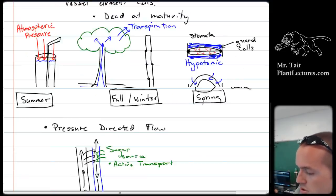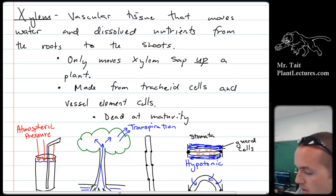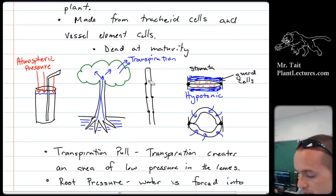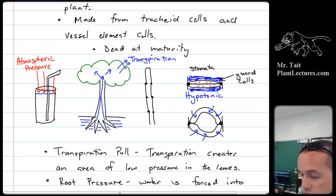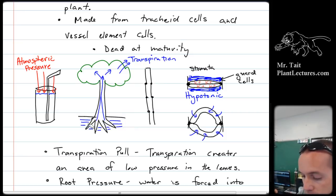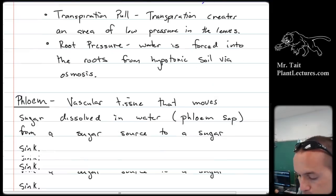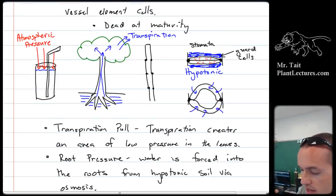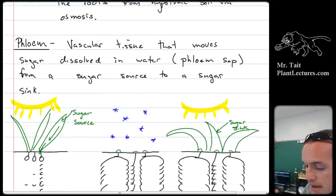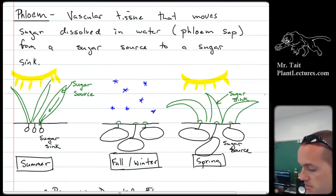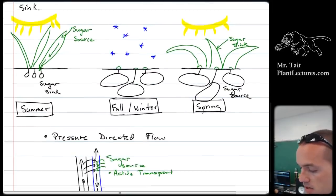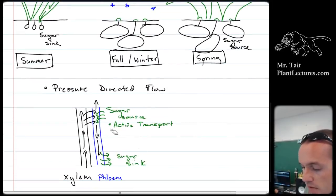Vascular tissue — two types: xylem and phloem. Xylem is the dead stuff that forms a hollow tube acting like a straw. Two forces move water up the xylem: transpiration pull, which is pressure potential, and root pressure, which is called solute potential, caused by a large amount of dissolved solutes in the roots compared to the soil. The xylem only moves water up, whereas the phloem can move water and nutrients in both directions. Phloem is made up of living cells that use pressure-directed flow, involving active transport to move things from a sugar source to a sugar sink.